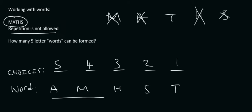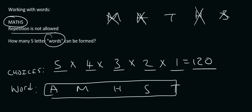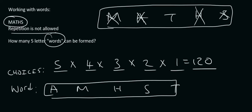Now obviously this isn't a proper English word, but that's not what we mean — we're talking about combinations. So how many different arrangements are there? We multiply all of these together, and that gives us 120 different words. So 120 different words can be made using the letters of the word 'maths'.